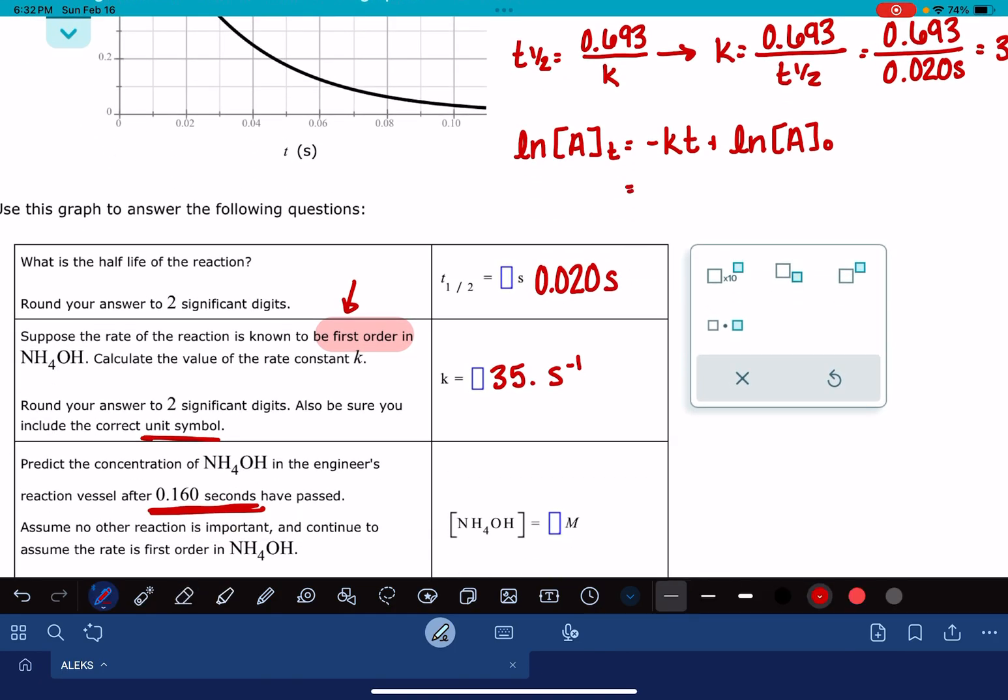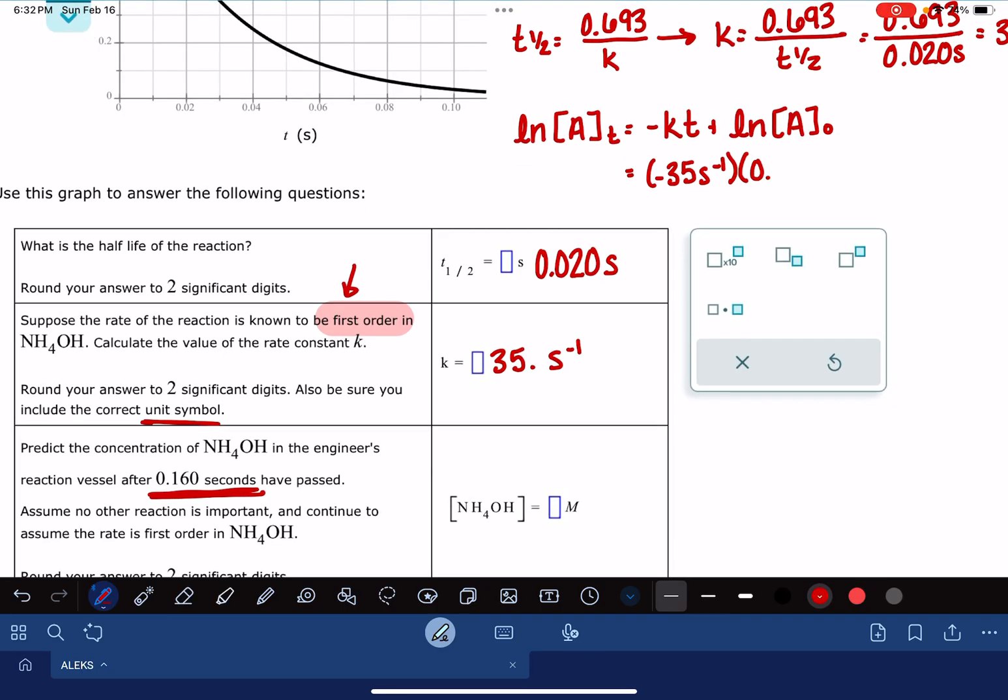My rate constant, negative 35 seconds to the minus 1. Or sorry, my rate constant is positive 35, but I've got that negative sign in front that I want to include. My time is 0.160 seconds, and from my graph, my initial concentration was 1. So I'm just going to do the math. Negative 35 times 0.160 is negative 5.6,